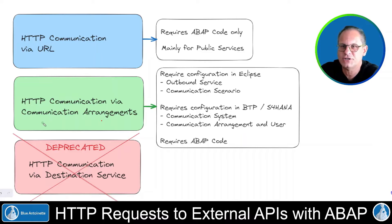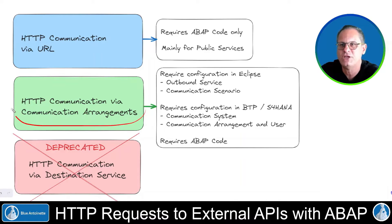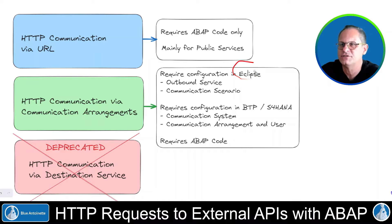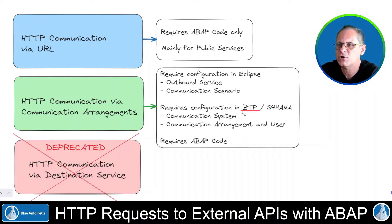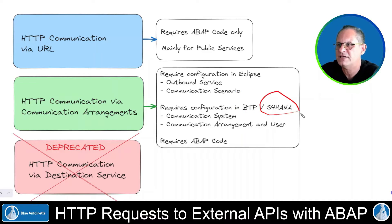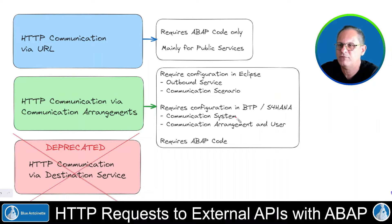The second communication type, HTTP communication via communication arrangements, requires a configuration in Eclipse. We have to define the outbound service here, and also the communication scenario. Additionally, it requires a configuration in SAP BTP, respectively in S4HANA if you're on an S4HANA system. Basically, we have to define a communication system and a communication arrangement.